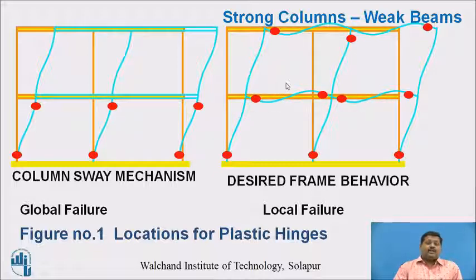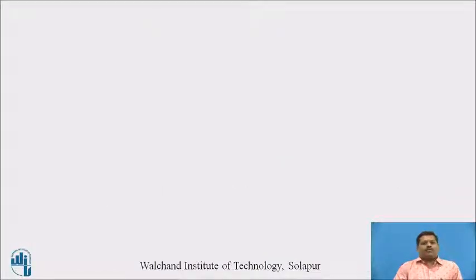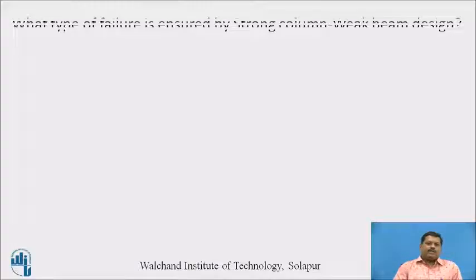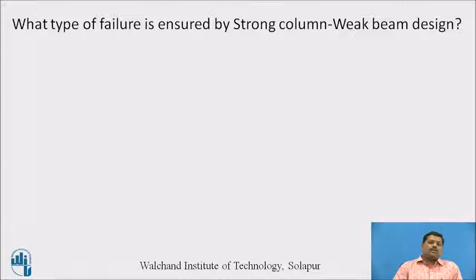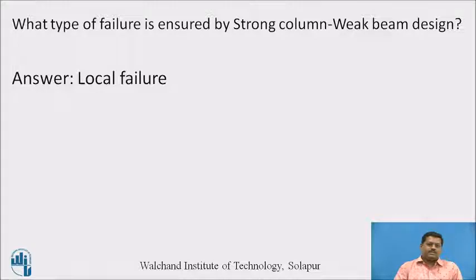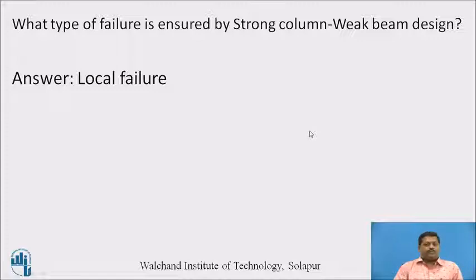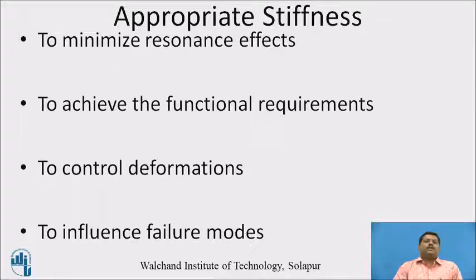This diagram gives us the desired frame behavior expected in an earthquake. To summarize with a question: what type of failure is ensured by strong column–weak beam design? The answer is local failure. With the strong column–weak beam approach, plastic hinges form in the beams, and the failure of the beams is designated as local failure for the frame — which is the preferred failure mode in earthquake-resistant design.